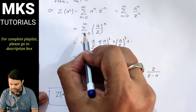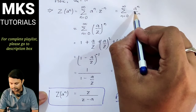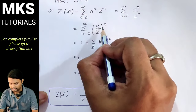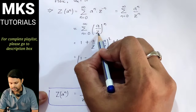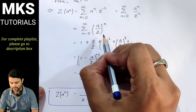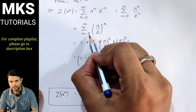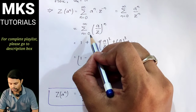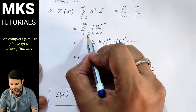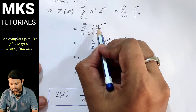This simplifies to summation n equal to 0 to infinity of (a upon z) to the power n. When we put n equal to 0, we get (a/z) to the power 0, that is 1. When n equals 1, we get a upon z. When n equals 2, we get (a/z) to the power 2, and so on: 1 plus a/z plus (a/z)^2 plus (a/z)^3 plus dot dot dot.